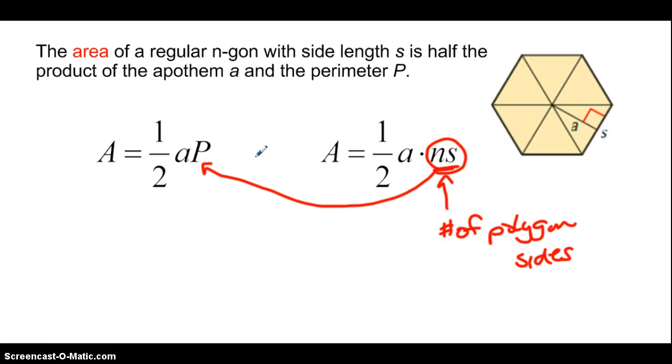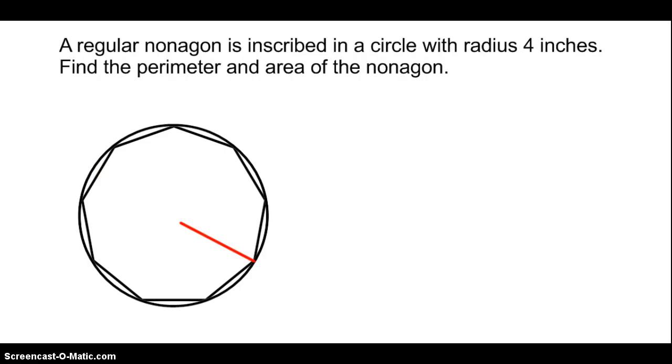And if you want to memorize the formula, which really you don't have to because you could derive it from those triangles that are formed, it'd be better to do that: one half a times P. So now let's look at an example applying this area of the polygon.